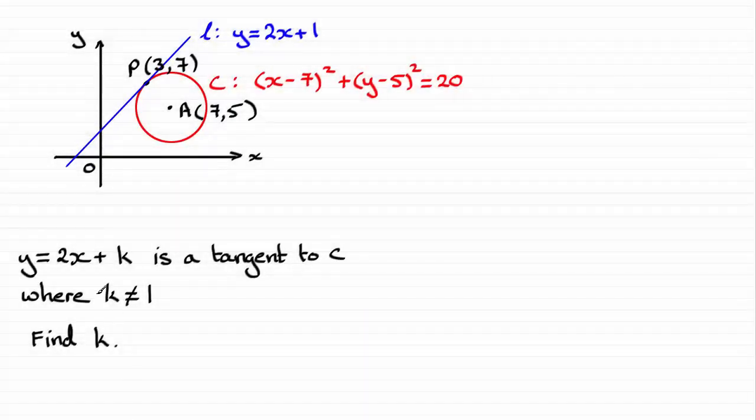Now for this next part, we're told that y equals 2x plus k is a tangent also to the circle C, where k doesn't equal 1. And we've got to find that value of k.